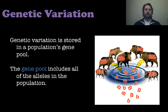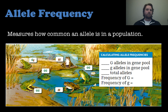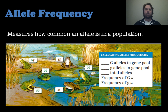Gene variation is stored in a population's gene pool, which is the collection of all of the alleles within a certain population. As shown in the example on the right, we have big B and little b representing the dominant and recessive alleles. This brings us to allele frequencies — how common the alleles are in a population: how common is the dominant allele versus the recessive allele out of the total alleles?